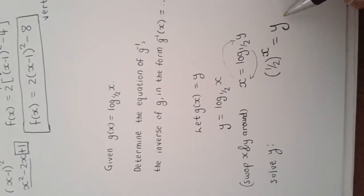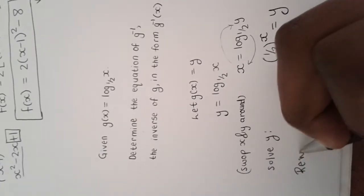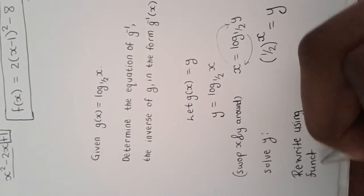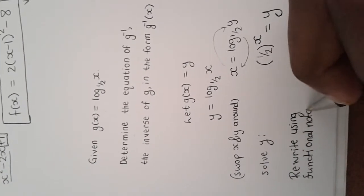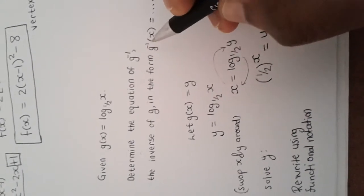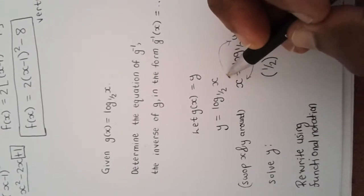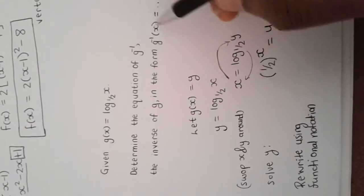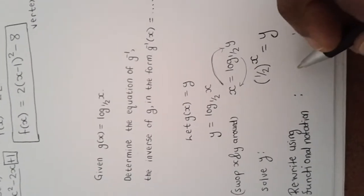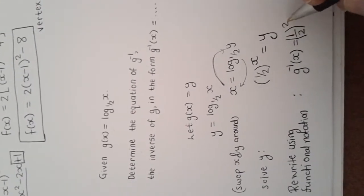Now because this is an exponential function, we can rewrite it using functional notation — that is, putting the negative one on the name of the function. Note: you can only use this notation if the inverse is actually a function. For example, with a parabola with no restriction, you can't use this notation. But in this case it is a function, so we write g⁻¹(x) = (1/2)^x.